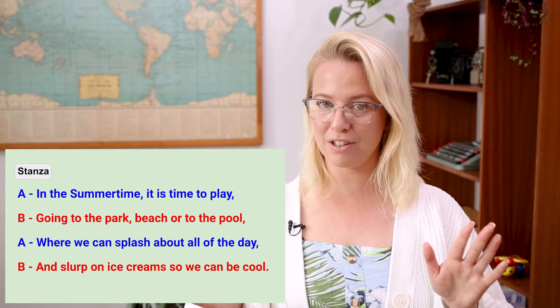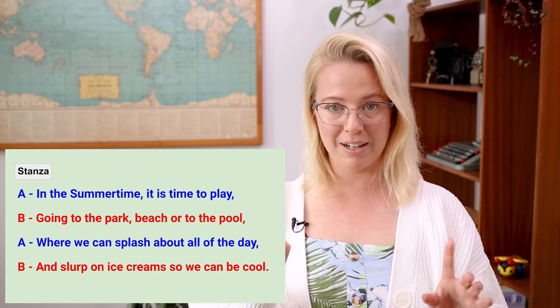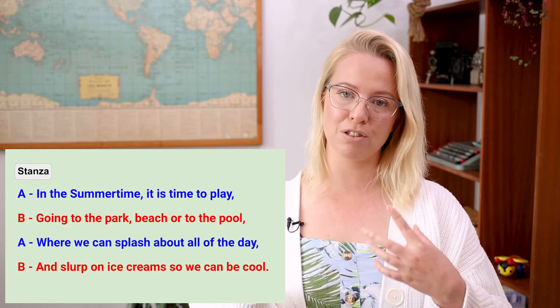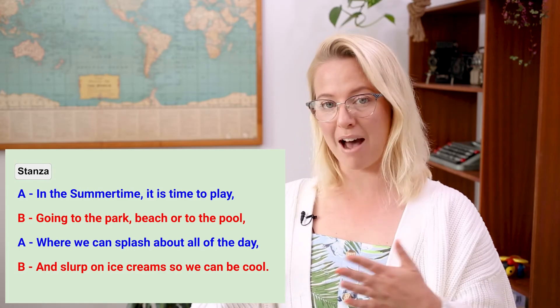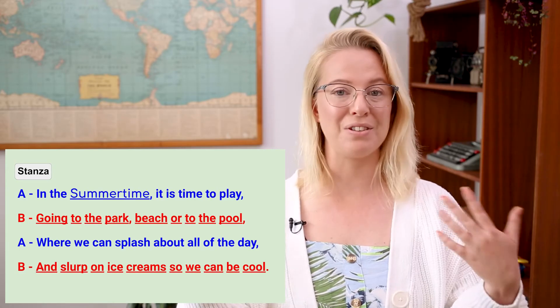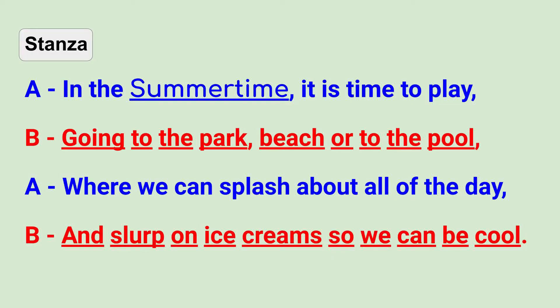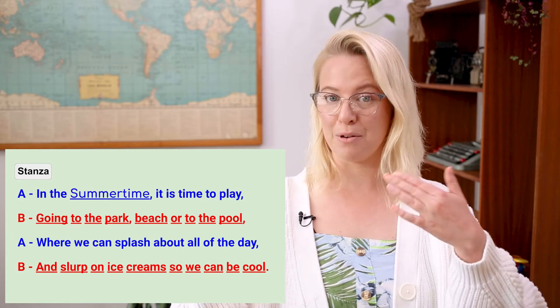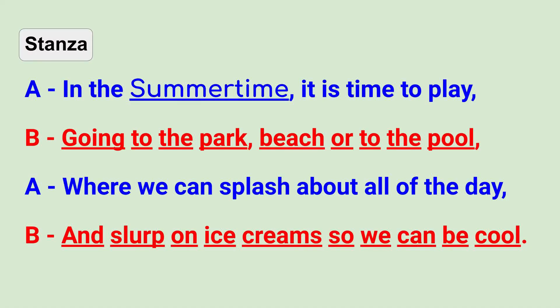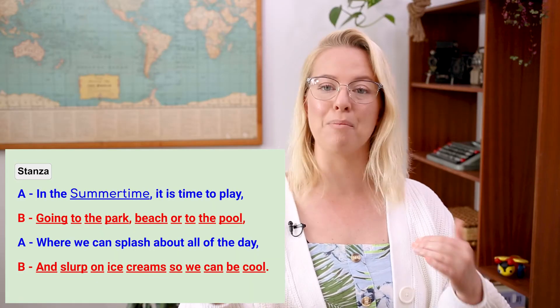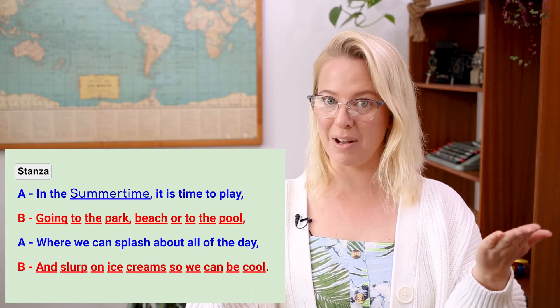Let's have a closer look at my example and make sure we're following all the rules. A helpful tip: when starting your sonnet, introduce your topic in the first line — I've used the word 'summertime.' Now let's check that line one and line three rhyme, as they're the blue lines: 'time to play' and 'all of the day' — play and day rhyme, so that's ticked off. Lines two and four: 'beach or to the pool' and 'so we can be cool' — pool and cool rhyme. So my blue lines rhyme and my red lines rhyme.